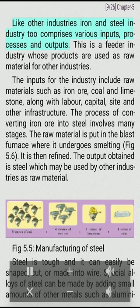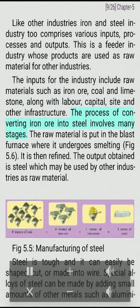Like other industries, iron and steel industry comprises various inputs, processes, and outputs. This is a feeder industry whose products are used as raw material for other industries. The inputs include raw materials such as iron ore, coal, and limestone, along with labor, capital, site, and other infrastructure. The process of converting iron ore into steel involves many stages. The raw material is put in a blast furnace where it undergoes smelting. It is then refined. The output obtained is steel, which may be used by other industries as raw material.